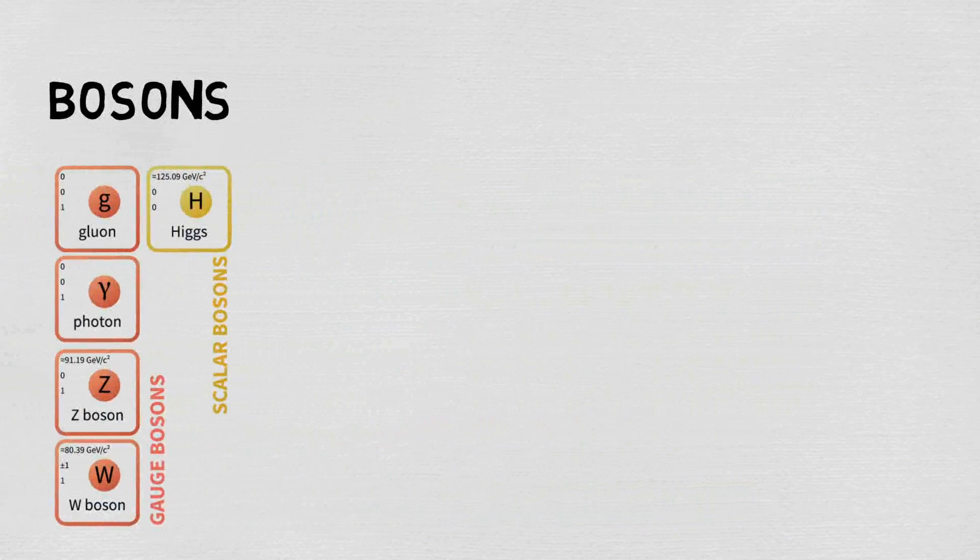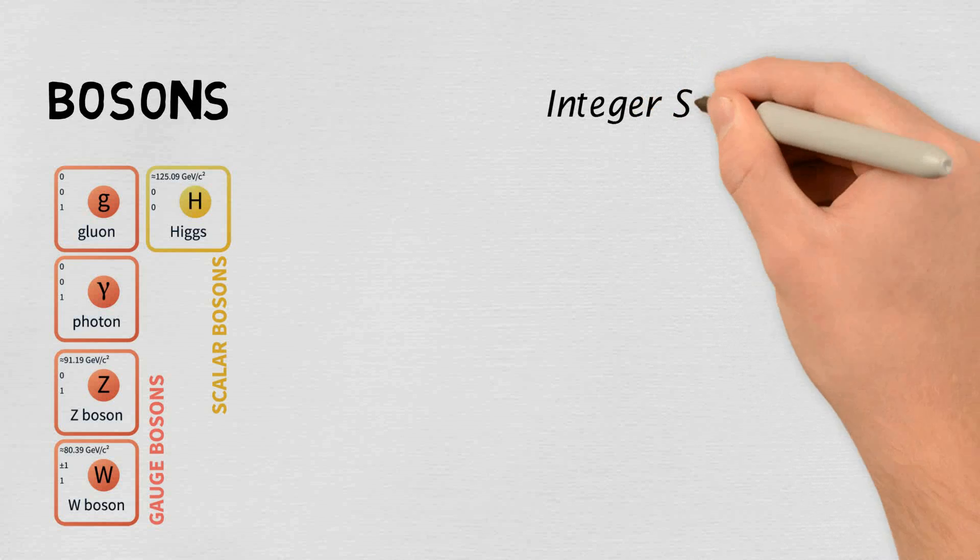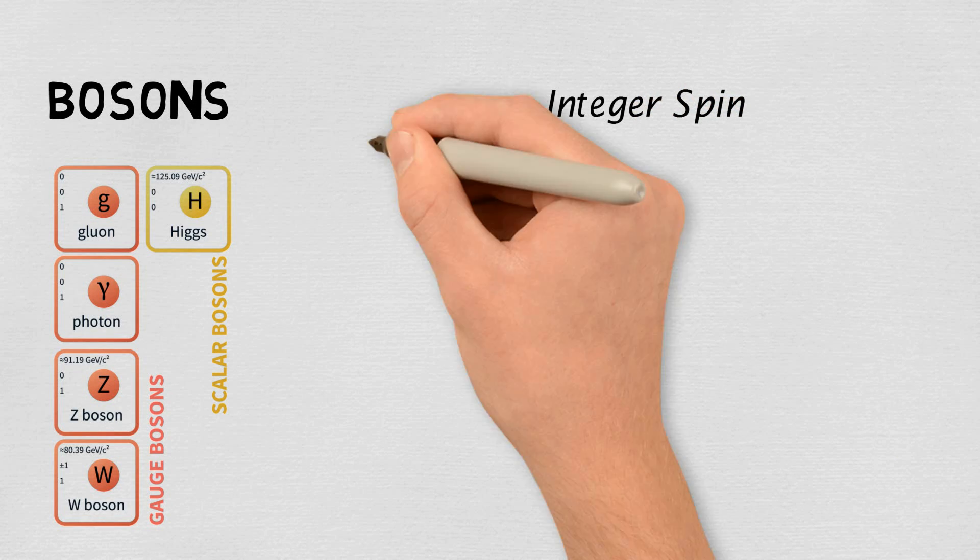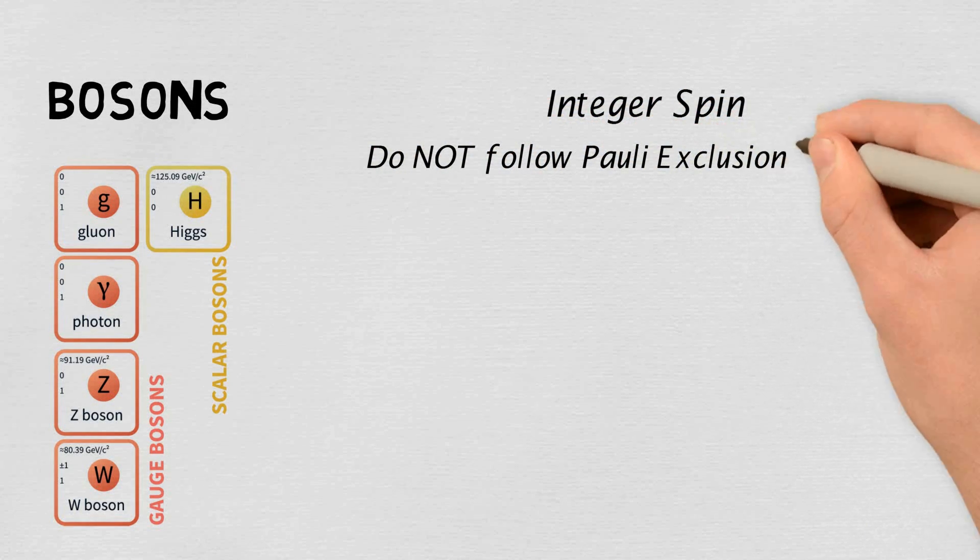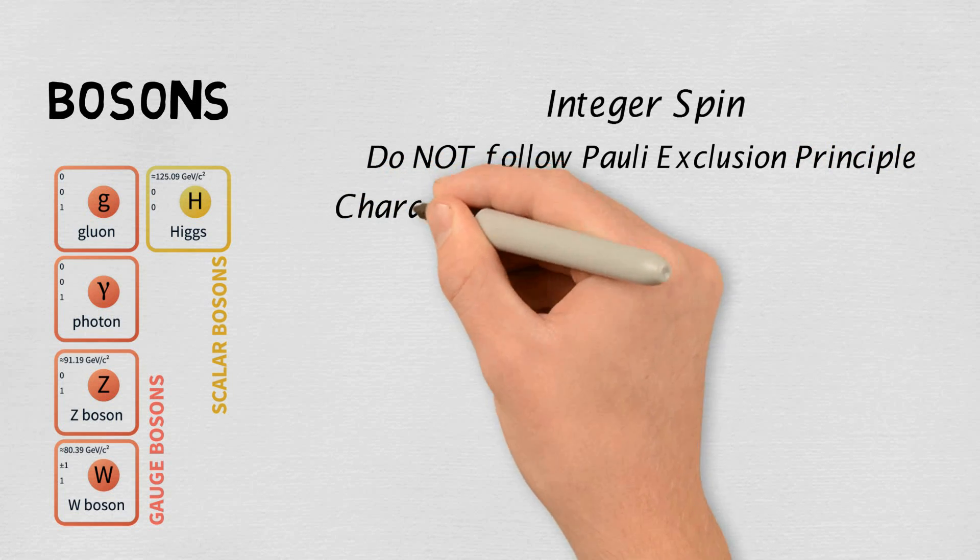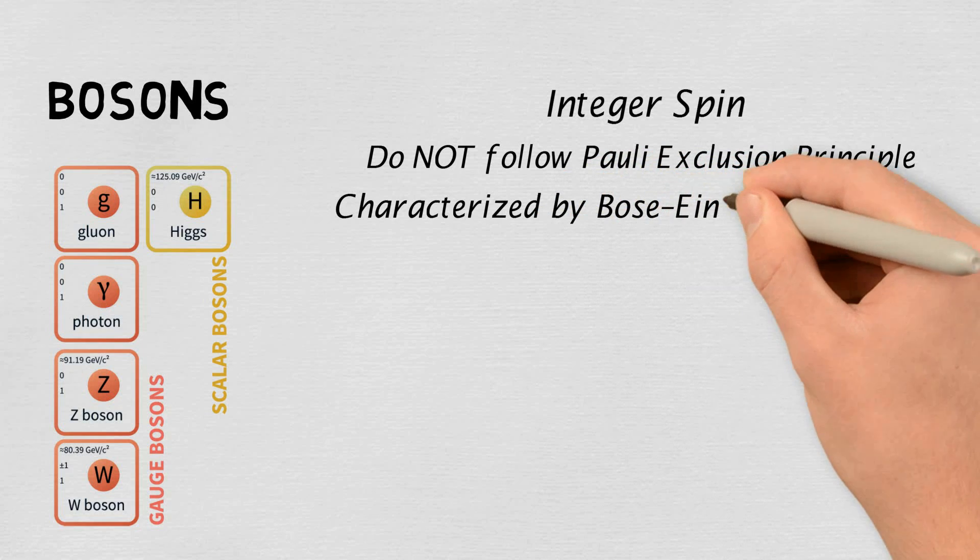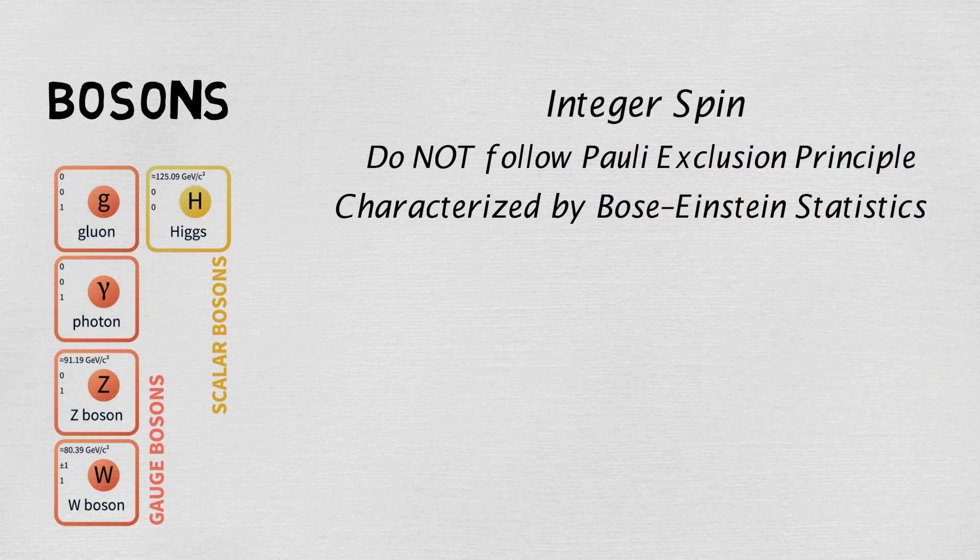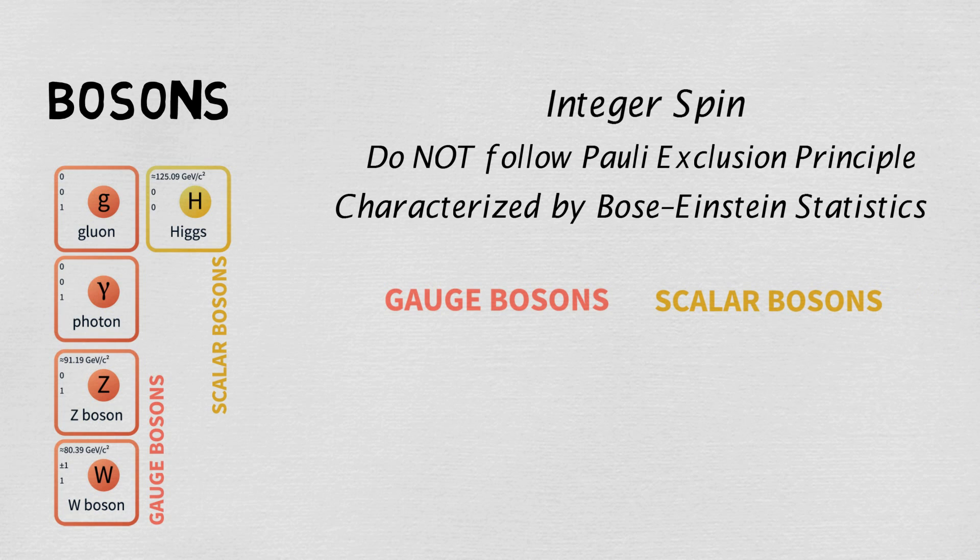Starting with the bosons. Bosons are the elementary particles with integer spin value of either 0 or 1. They do not follow Pauli exclusion principle and are characterized by Bose-Einstein statistics. Bosons are classified into gauge bosons and scalar bosons depending on the value of spin. Gauge bosons have the spin value of 1 while scalar bosons have the spin value of 0.